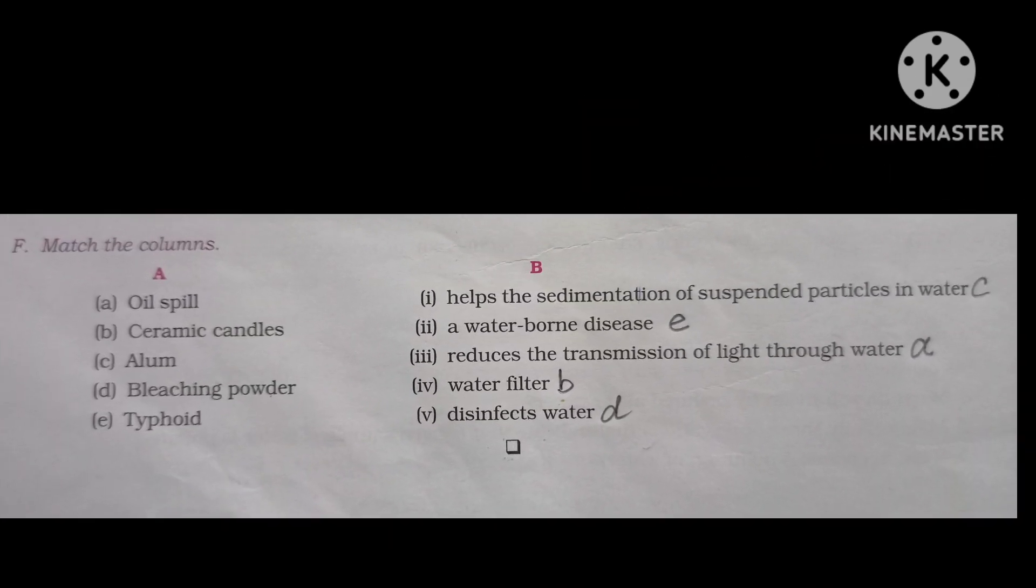Next we have Match the following. In column A we have one side something and in column B we have other thing we have to match them. So option A is oil spill, correct answer will be reduces the transmission of light through water. B is ceramic candles, it is used in water filter. C is alum, so alum helps the sedimentation of suspended particles in water. D is bleaching powder, so answer for bleaching powder will be disinfects water. And E is typhoid, so it is a waterborne disease.